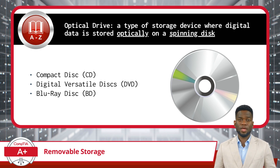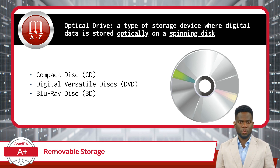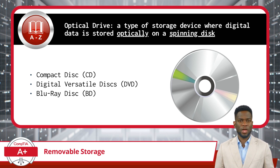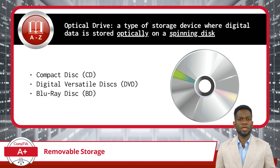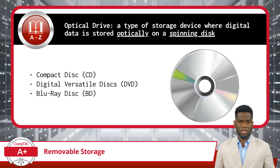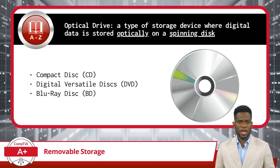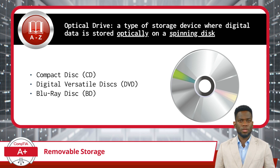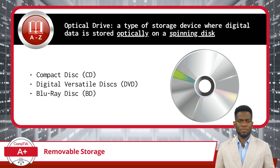The drive interprets the reflected signals as digital data, such as audio, video, or computer files. Similarly, when writing data to a disk, the optical drive uses a laser to etch or burn information onto the disk's surface. This process creates pits and lands on the disk that represent the data being written. Once the data is written, it can be read by any compatible optical drive.